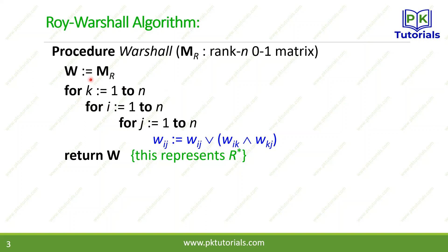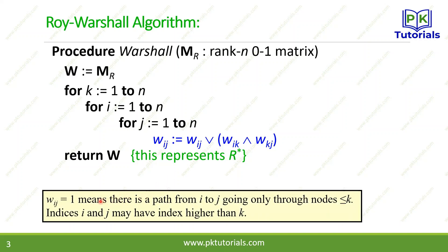The algorithm works in plain steps. For each member, we need to find the transitive closure. A value of 1 in the matrix means there is an edge or path between nodes. A value of 0 means there is no path.